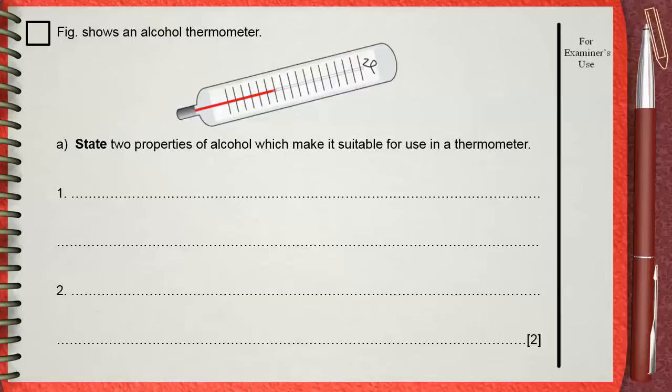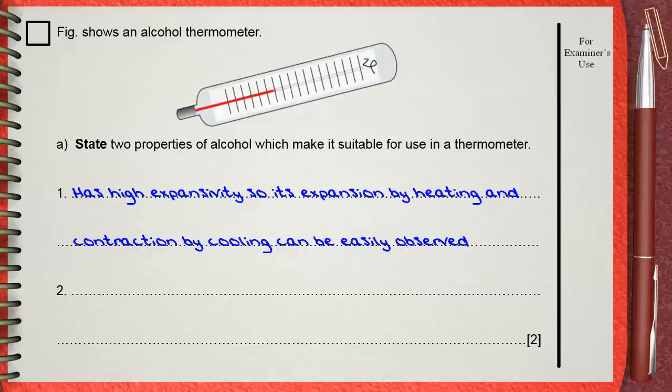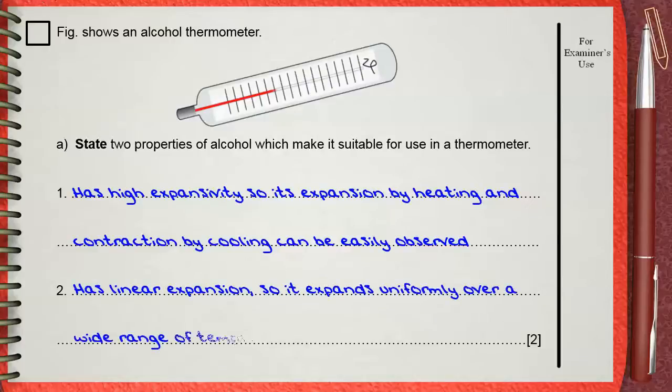Among these are: has high expansivity, so its expansion by heating and contraction by cooling can be easily observed. Number two: has linear expansion, so it expands uniformly over a wide range of temperatures.